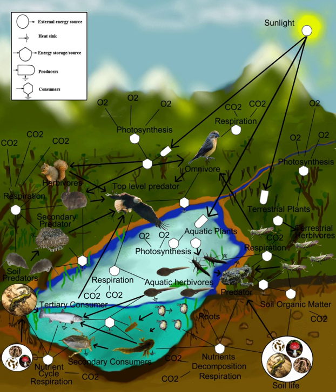Charles Elton pioneered the concept of food cycles, food chains, and food size in his classical 1927 book Animal Ecology. Elton organized species into functional groups, which was the basis for Raymond Lindemann's classic and landmark paper in 1942 on trophic dynamics.